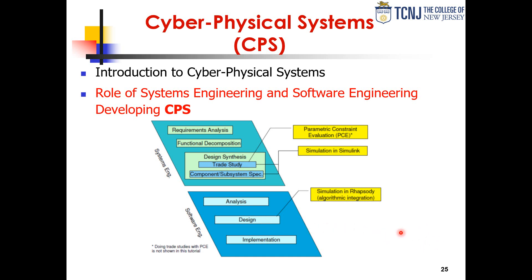On the software engineering side, more sophisticated practices can bring the approach of software development as a design problem rather than a coding problem — formal analysis of the problem, algorithm analysis, simulation of algorithms before code implementation, and optimization of algorithms at a higher level of abstraction than actual software code, followed by implementation. This is where most of the risk is and where we lack the most discipline when implementing complex systems.